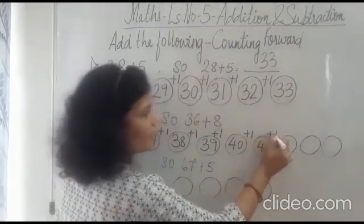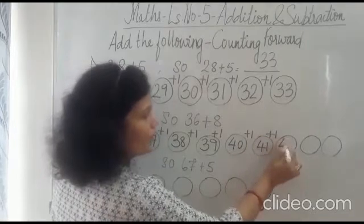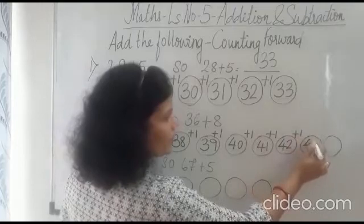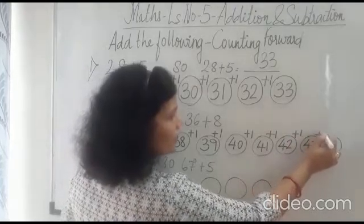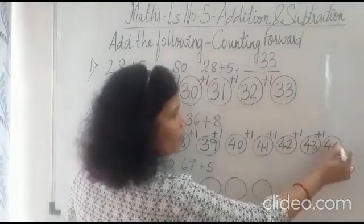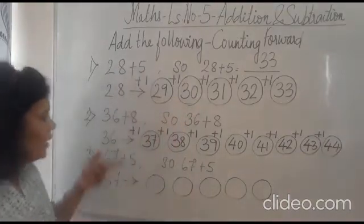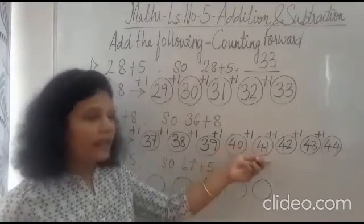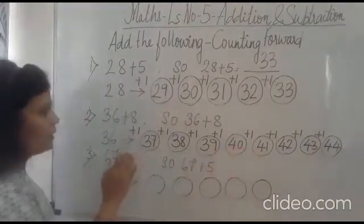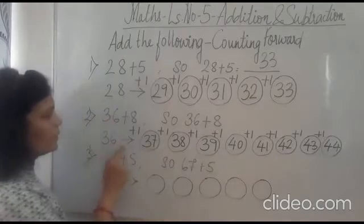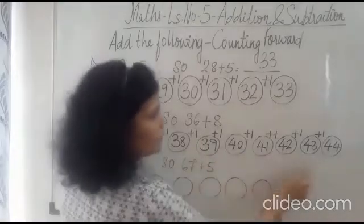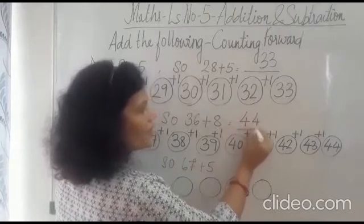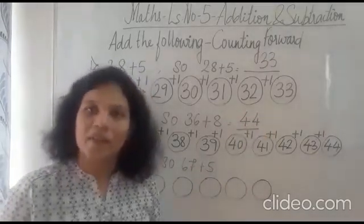Now we will see again. 41 plus 1 is 42. 42 plus 1 is 43. And 43 plus 1 is 44. Correct. You are correct now. Now how many numbers we have added here? We have added 8 number. So we have taken 8 step ahead. So 36 plus 8. The answer will come 44. Yes. You are correct. The answer is 44.